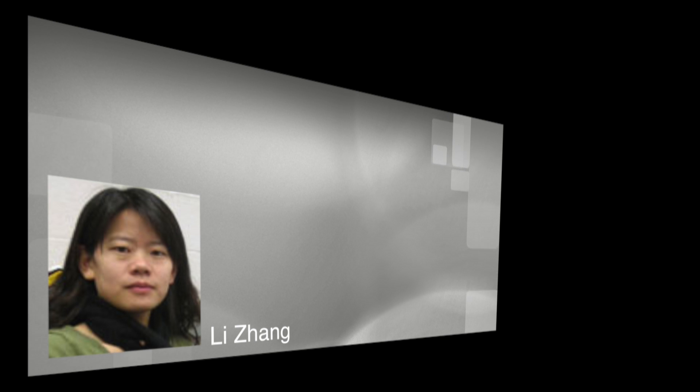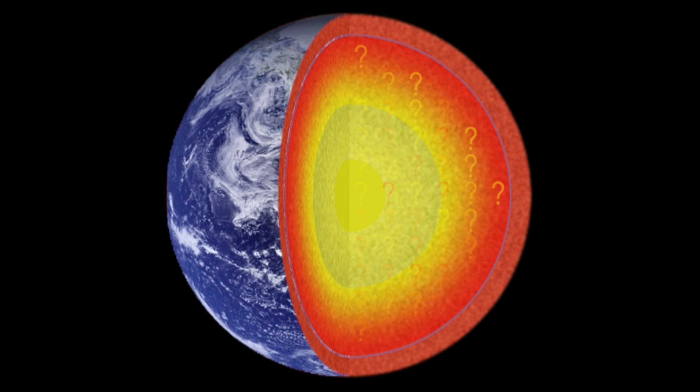Lead author Li Zhang, also of Carnegie, explains that scientists still don't fully understand the chemistry of the H-phase. This finding indicates that all geodynamic models need to be reconsidered to take the H-phase into account. And there could be even more unidentified phases down there in the lower mantle as well, waiting to be identified.